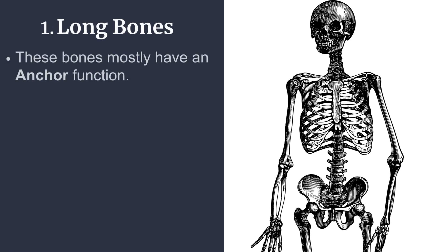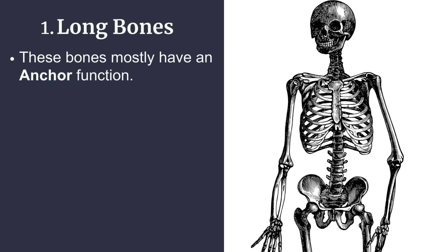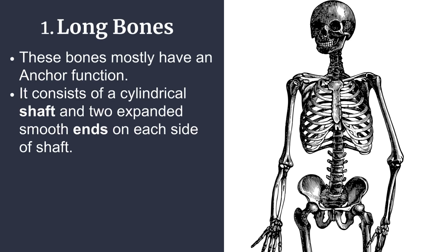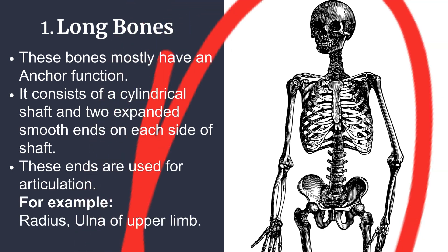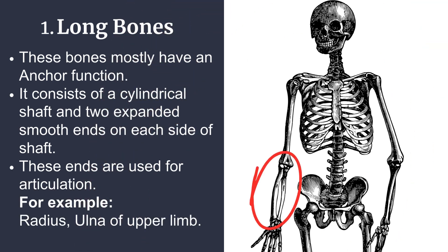Long bones mostly have an anchor function. They consist of a cylindrical shaft and two expanded smooth ends on each side of the shaft. These ends are used for articulation. For example, the radius and ulna of the upper limb.